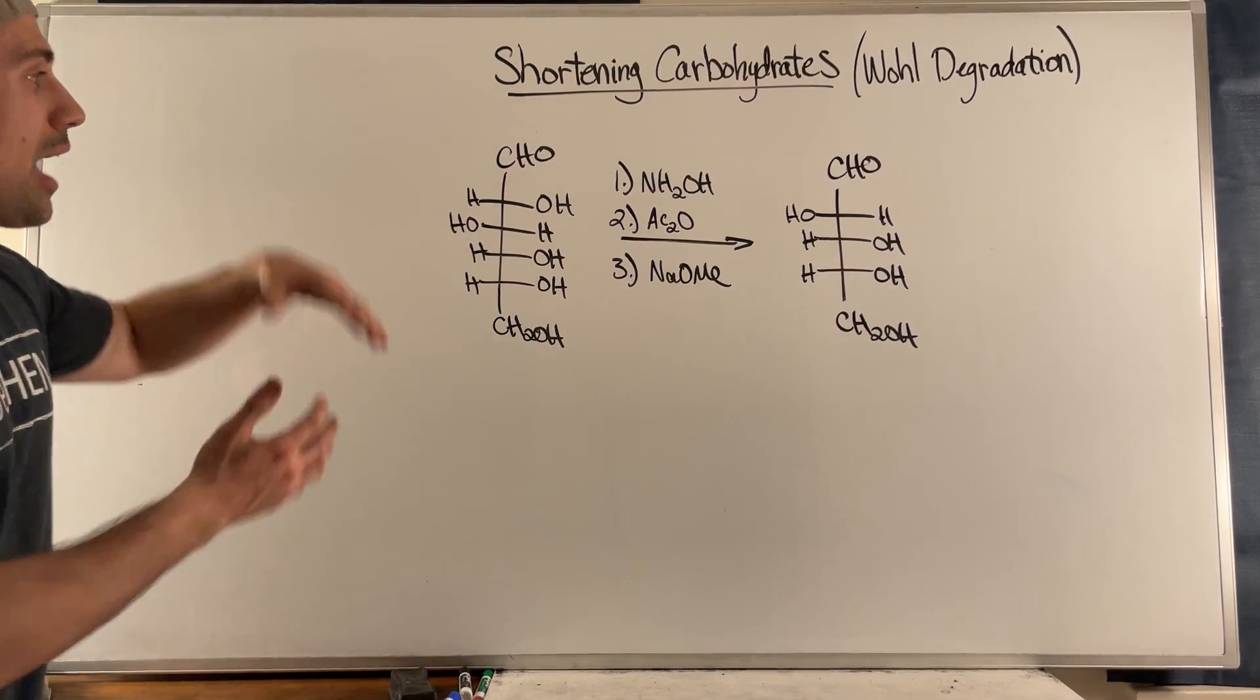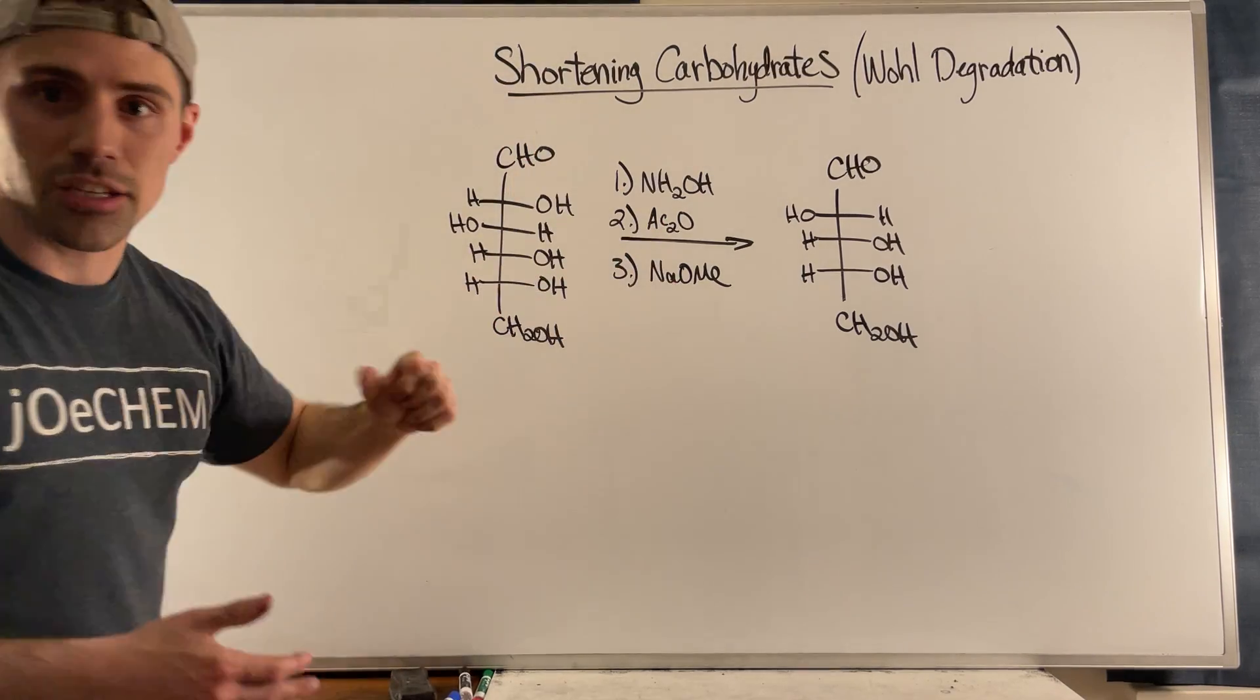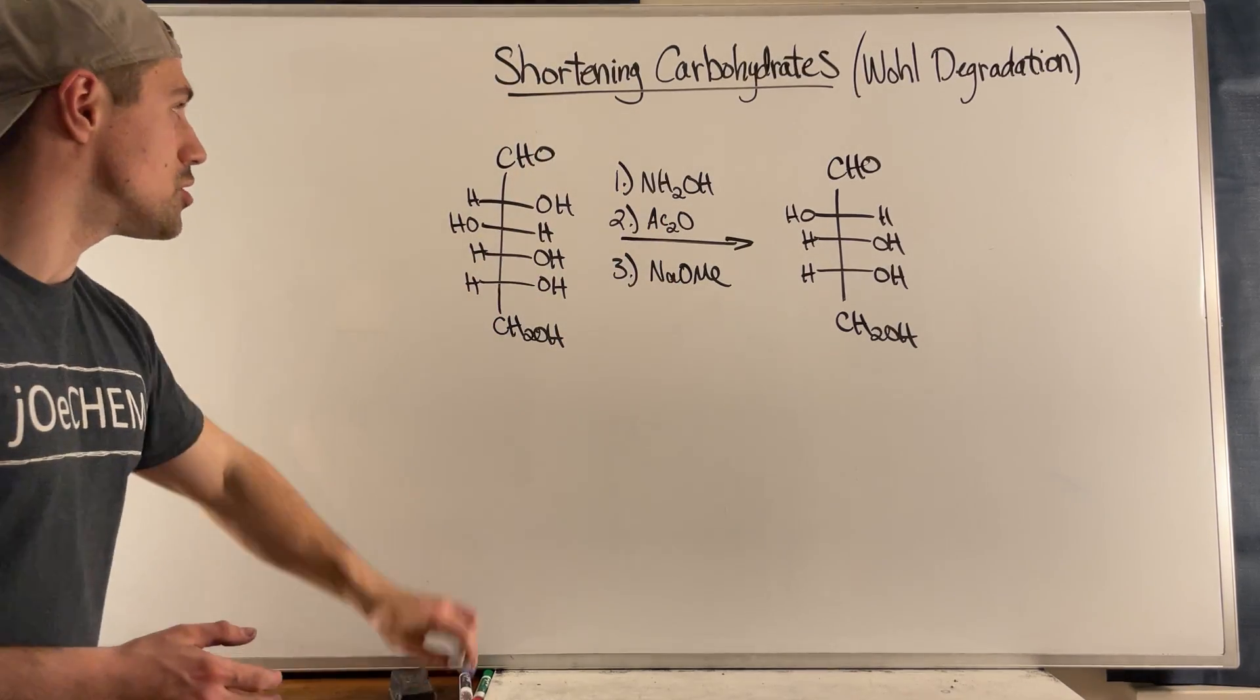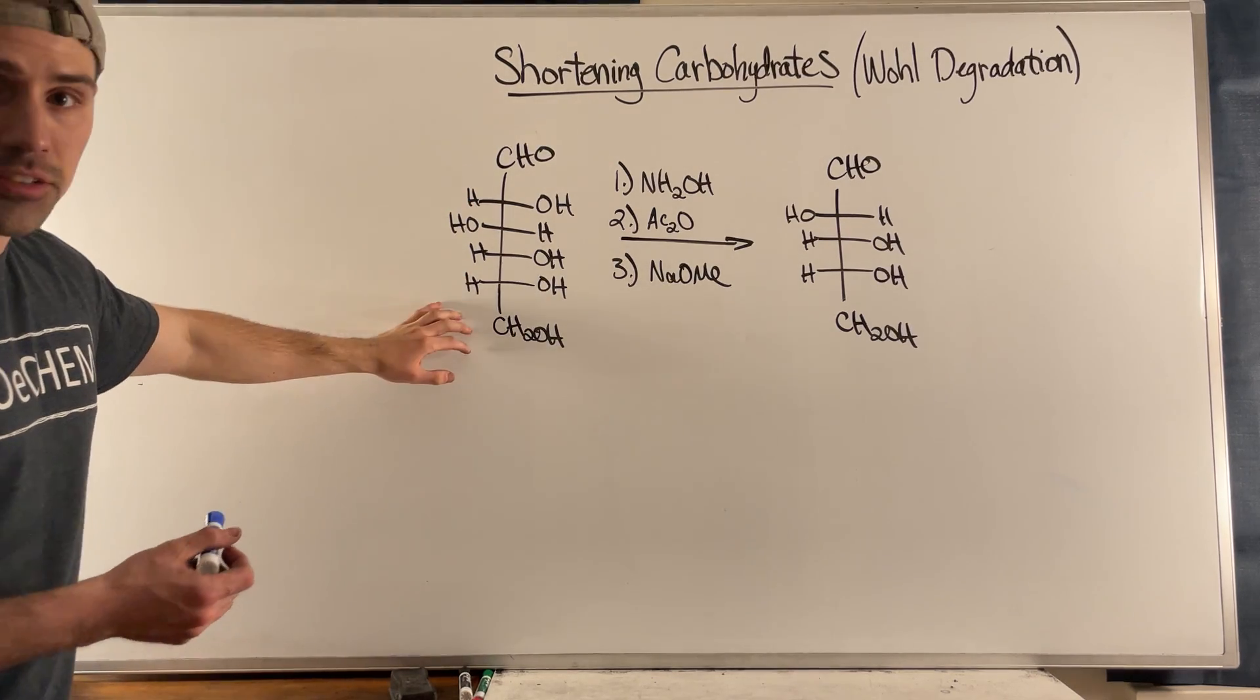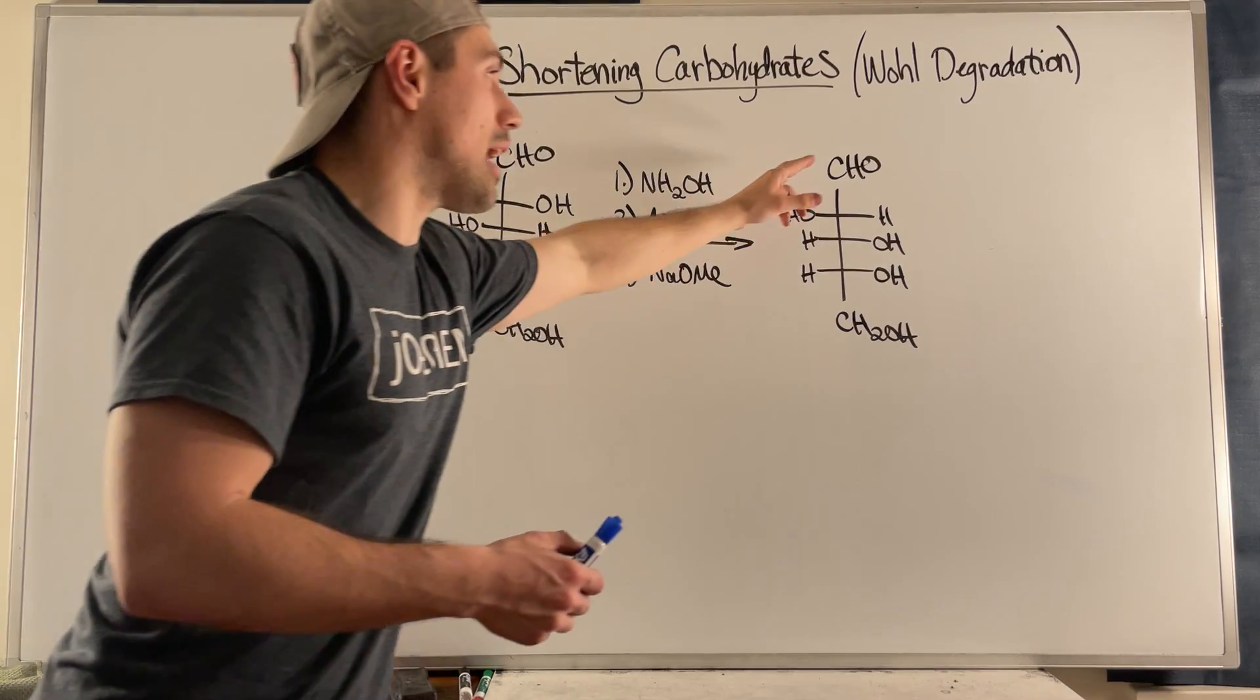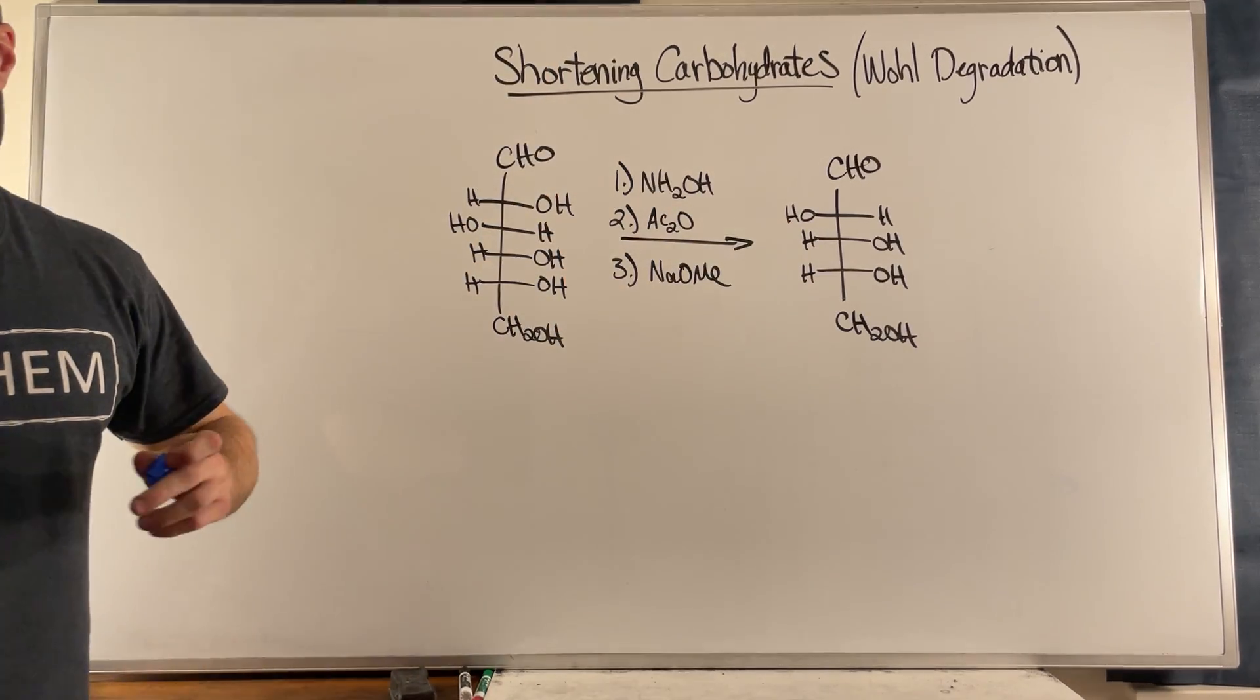Essentially, if you have a carbohydrate and you submit it to these conditions right here, what you actually do is you chop off a carbon. So you can see we have an aldo hexose right here and we actually go down to an aldo pentose.